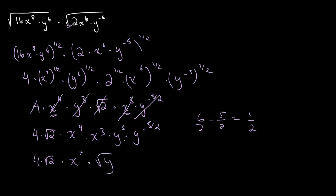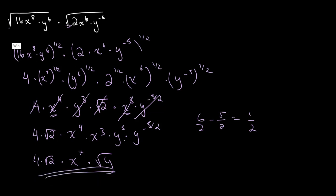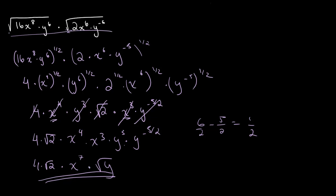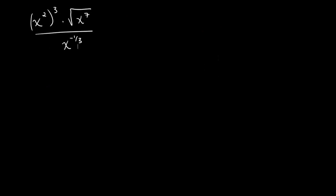As we can see, this looks much simpler and cleaner than what we had in the beginning. Okay, let's look at another example. Here we have x squared, whole to the power of 3, multiplied by the square root of x to the power of 7, whole divided by x to the power of negative 1 over 3.